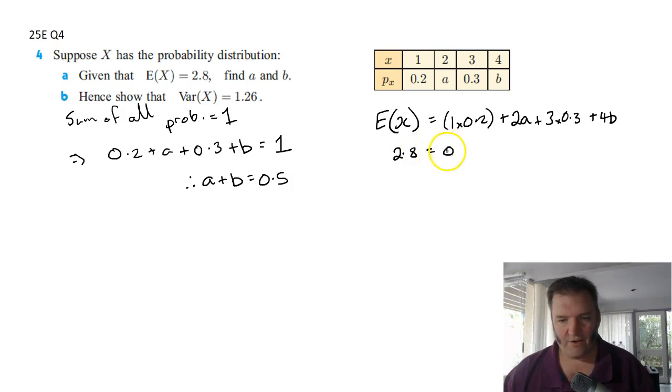So a bit of simplifying here. I've got 0.2 plus 2a plus 0.9 plus 4b. So it's going to be 1.7 equals 2a plus 4b. What we've got here? Simultaneous equations. Pretty easy to solve from here.